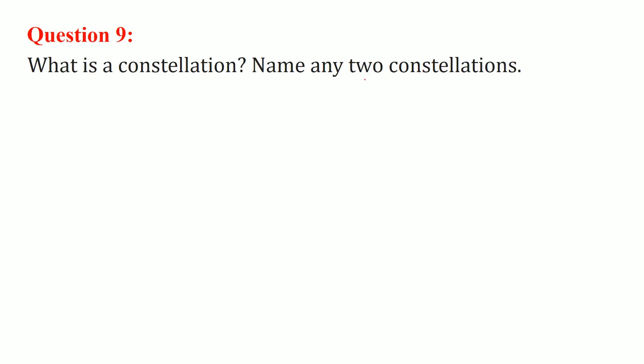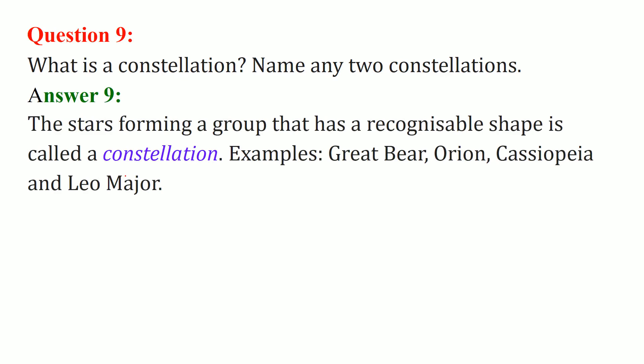What is a constellation? Name any two constellations. The stars form a recognizable shape or pattern. So this star forming group that has a recognizable shape is known as a constellation. Great Bear, Orion, Cassiopeia, and Leo Major - these are examples of constellations.